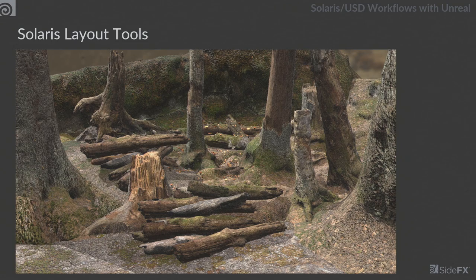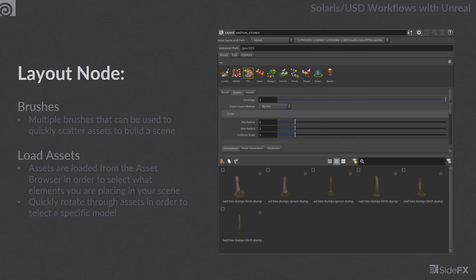Now let's talk about the layout tools in Solaris. One of the most powerful is a newer node — the layout node. The concept is that you have brushes you can use on your scenes: different ways like drawing a lasso and filling it with assets, painting them on your landscape, or placing them individually. There are a whole bunch of them and we're building more in each release. At the bottom you can see our assets — kind of like our paint palette — which allows you to select which assets you're using with the brush to populate your environment.